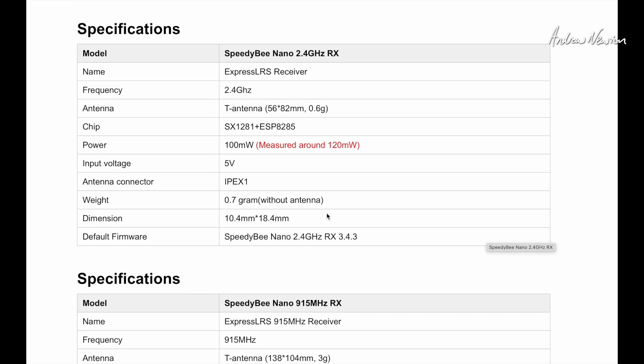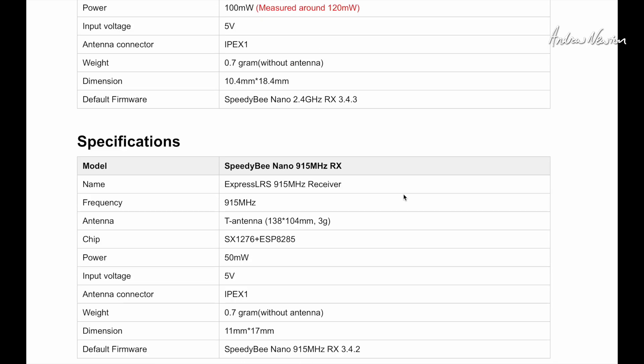And let's look here. ExpressLRS 2.4 gigahertz. It's got the SX1281 RF chip and the ESP8285 MCU. 5 volts input. IPAX1 antenna connector, 0.7 gram without the antenna, which is pretty much nothing.